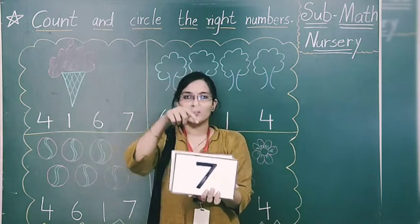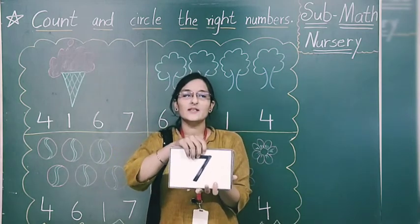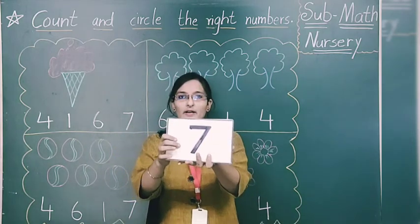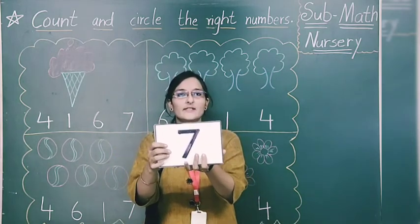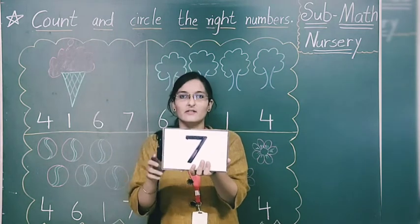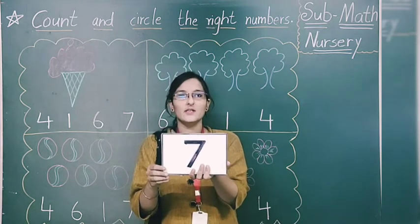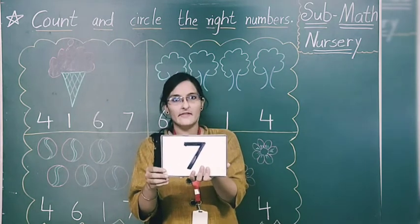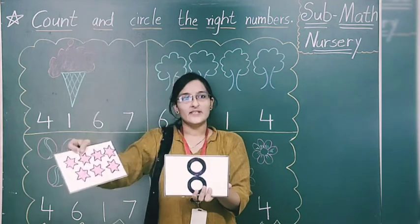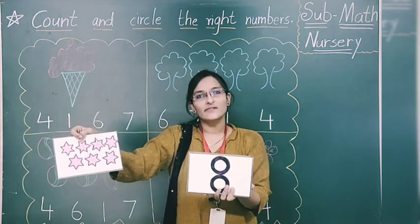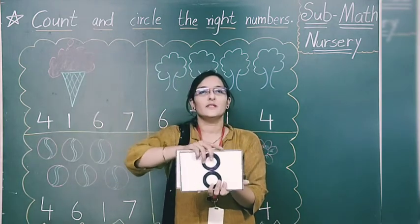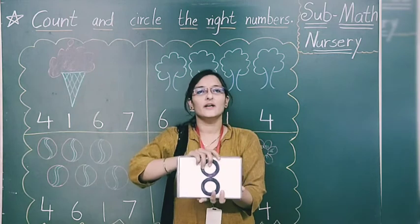Moving to next. Which number is this? You can see over here — which number is this? 7. How many rectangles are there? 7. Repeat with me: 7.